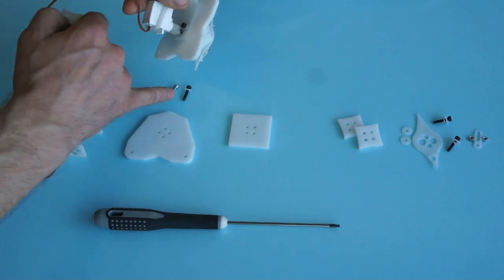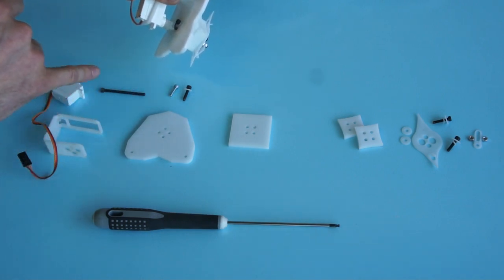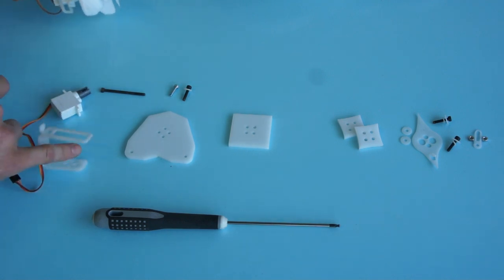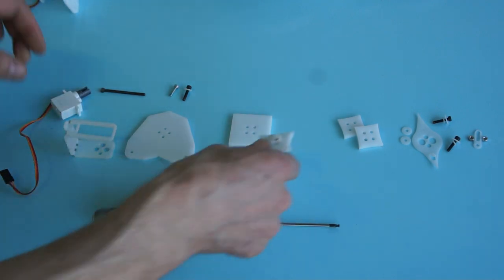Then we have two M3 screws of different lengths in the bottom, one with a washer. The shaft comes from the servo, and the servo is held by the servo bracket.